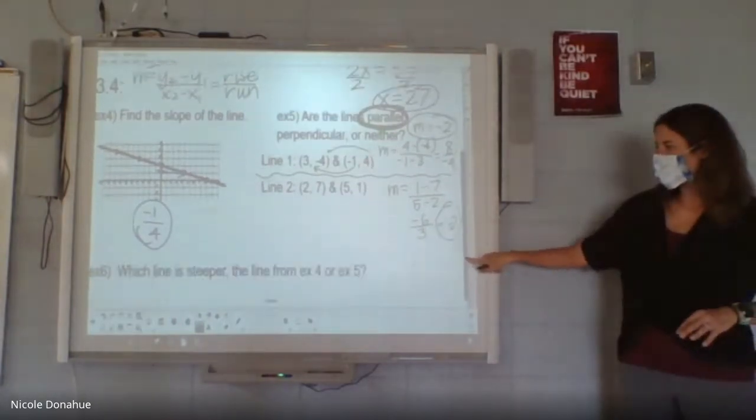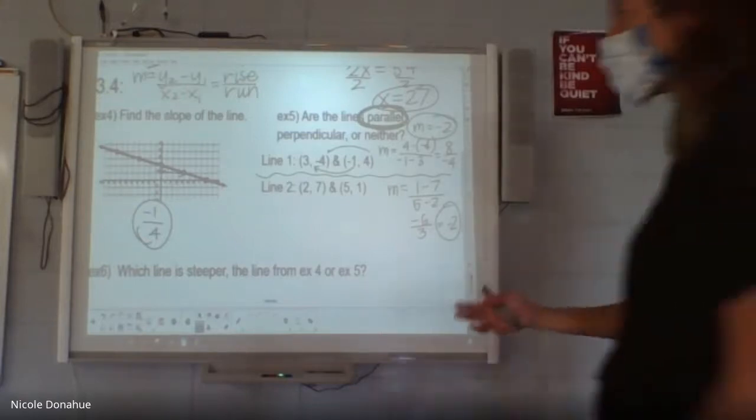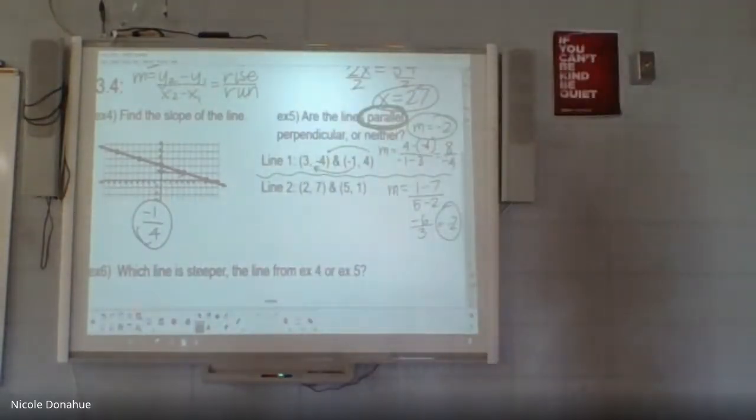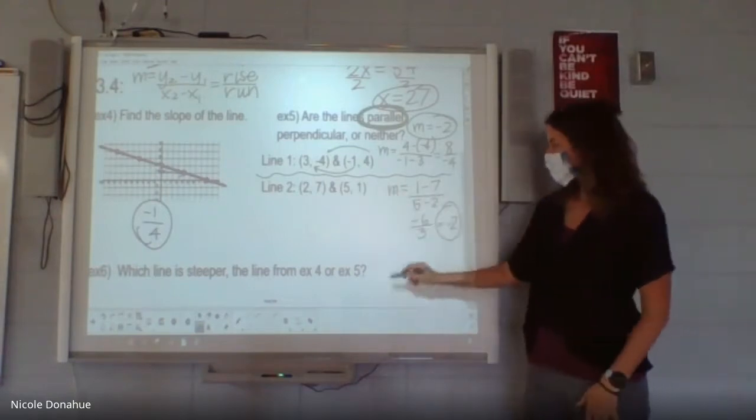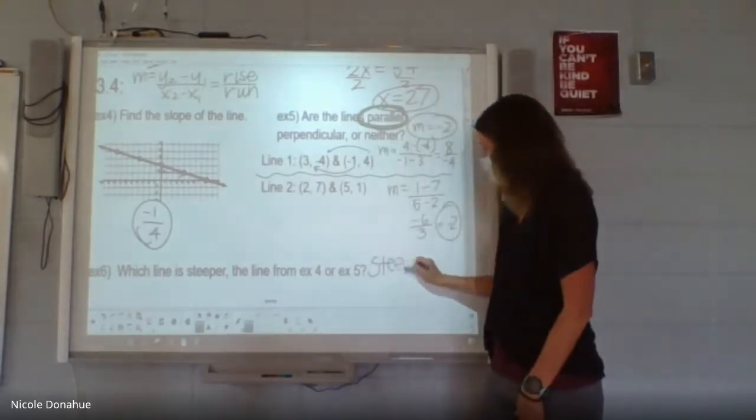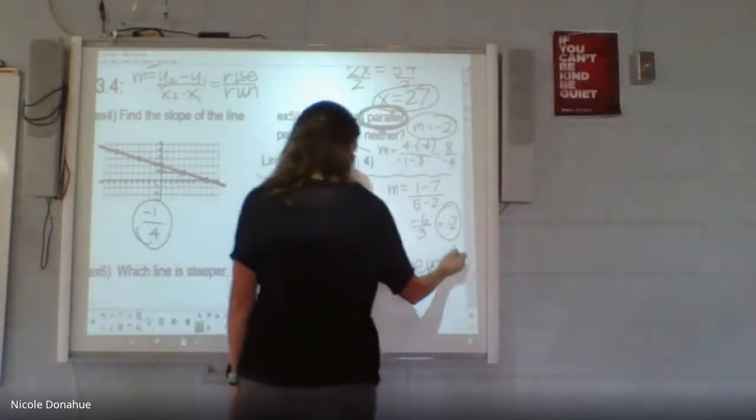Then it asks us the question, which line is steeper? The slope from example four or example five? Which is going to be a steeper slope? Example five. The negative two is actually steeper than the negative one-fourth. Remember, the negative versus positive doesn't really matter. It's just like the absolute value there. So like which one is actually a bigger value. Two is bigger than a fourth. So this is the steeper line. So this is the steeper slope here.